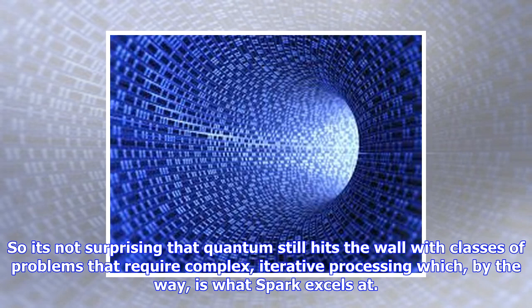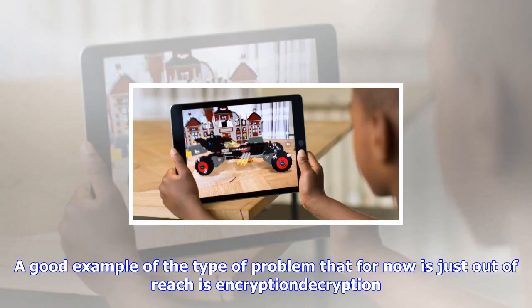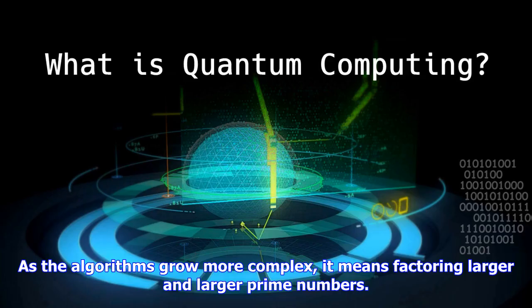But quantum computing development is still embryonic. A small Canadian startup, D-Wave Systems, is selling units on a limited basis today. IBM is offering machines from a half dozen 5 to 17 qubits in the cloud while Google is developing architectures that could scale up to 49.